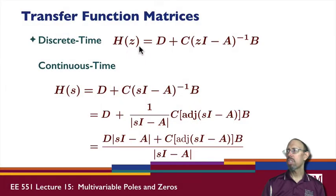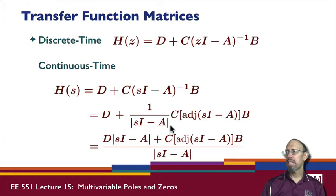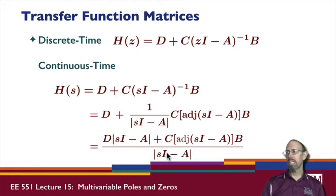So in both continuous time and discrete time, we have a similar form for our transfer function: D plus C times (SI minus A) or (ZI minus A) inverse times B. Now, (SI minus A) inverse equals the adjugate of (SI minus A) divided by the determinant of (SI minus A). The determinant is a scalar, so I can take it outside the multiplication. Putting everything over a common denominator gives a polynomial matrix in the numerator and a scalar denominator — which will be the characteristic polynomial. This is what the transfer function looks like, and it will be similar in discrete time with Z's instead of S's.